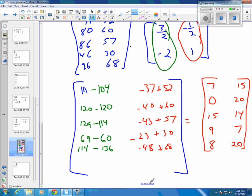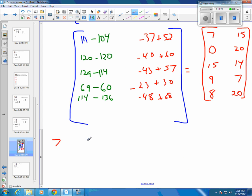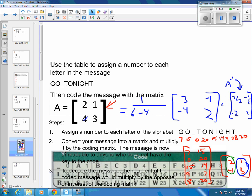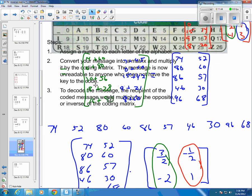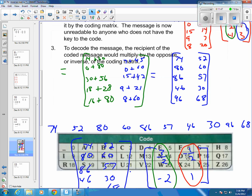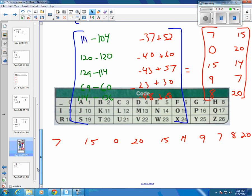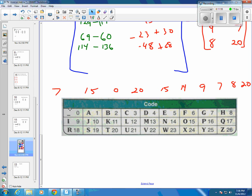And so when you pull that all out, the person receiving the message would say 7, 15, 0, 20, 15, 14, 9, 7, 8, and 20. All the way back to the top. And if I grab this code and I bring it down.